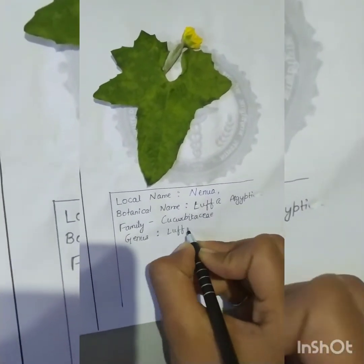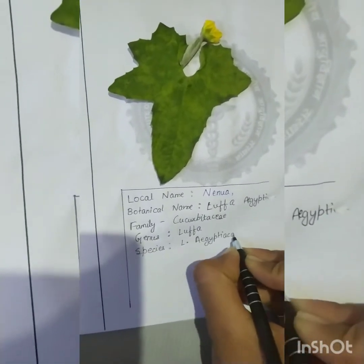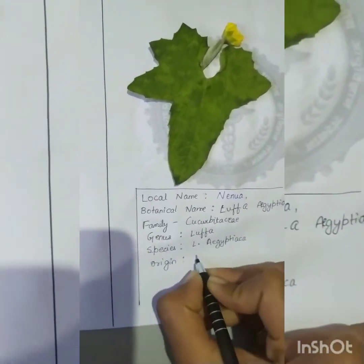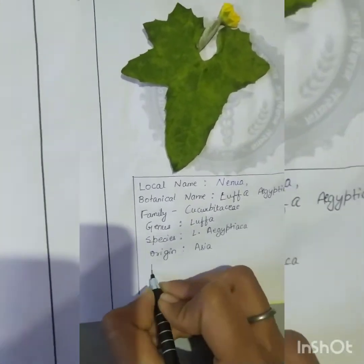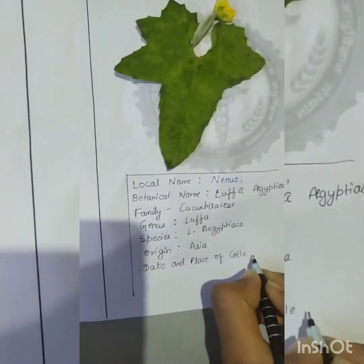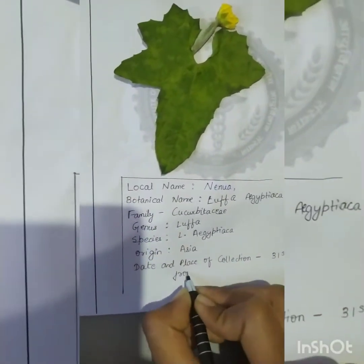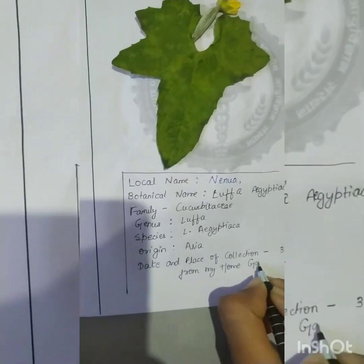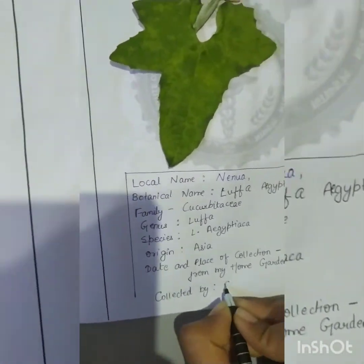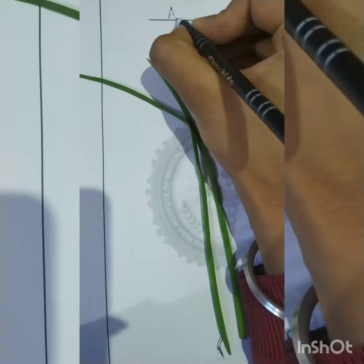The next plant is sponge gourd. The local name is nenua, botanical name is Luffa aegyptiaca, family Cucurbitaceae, genus Luffa, species L. aegyptiaca, and origin is Asia. Mention the date and place of collection and who collected it.